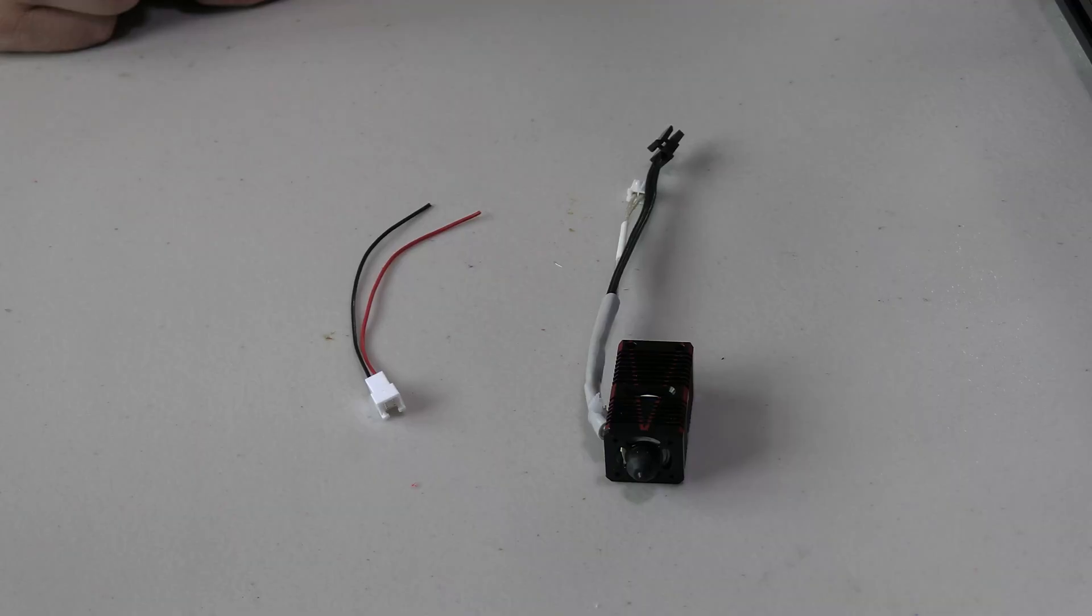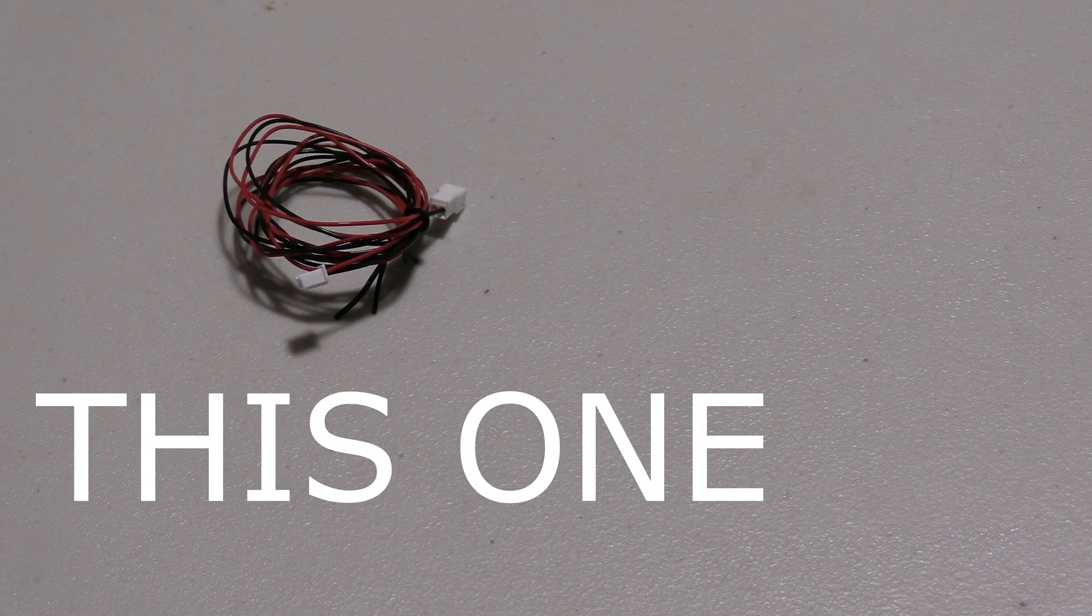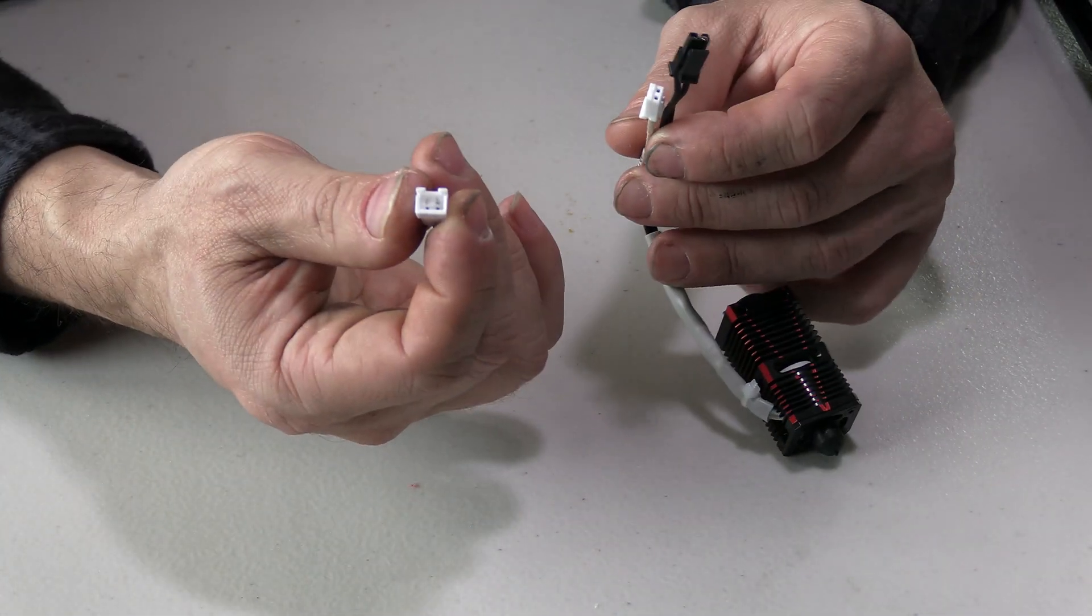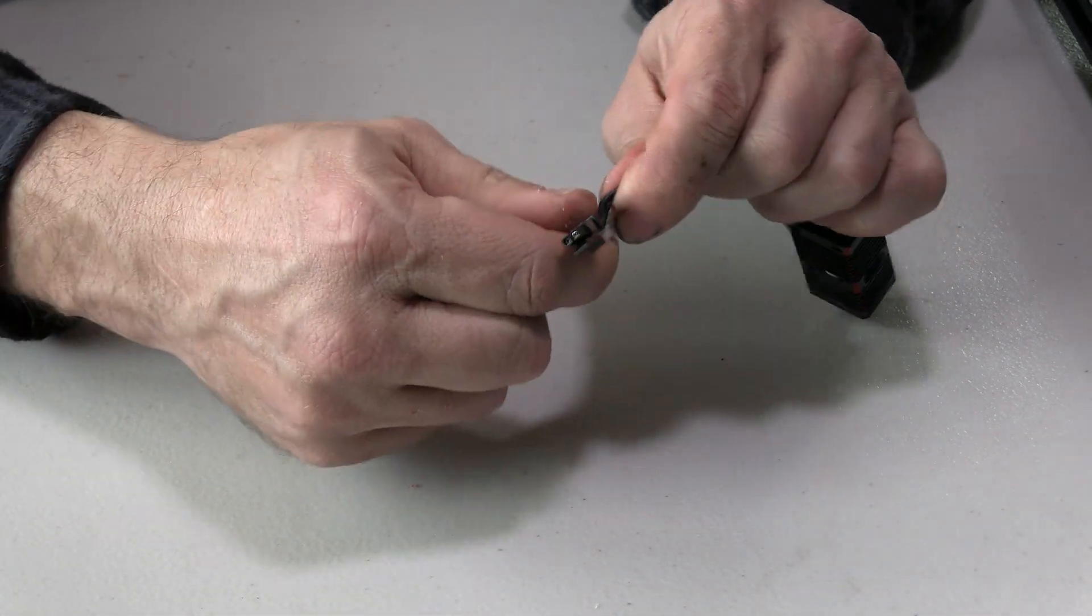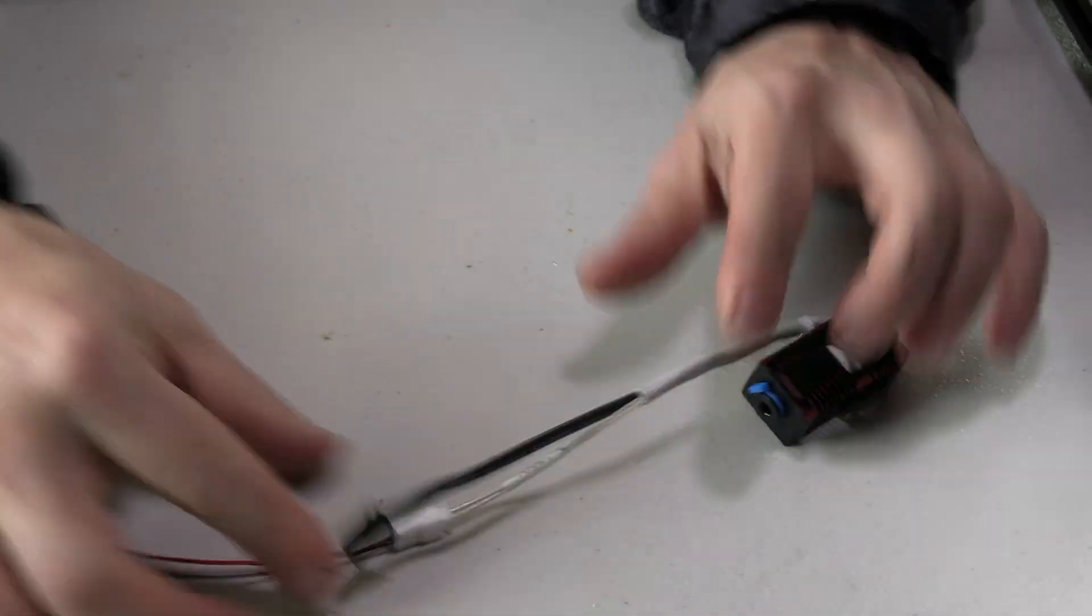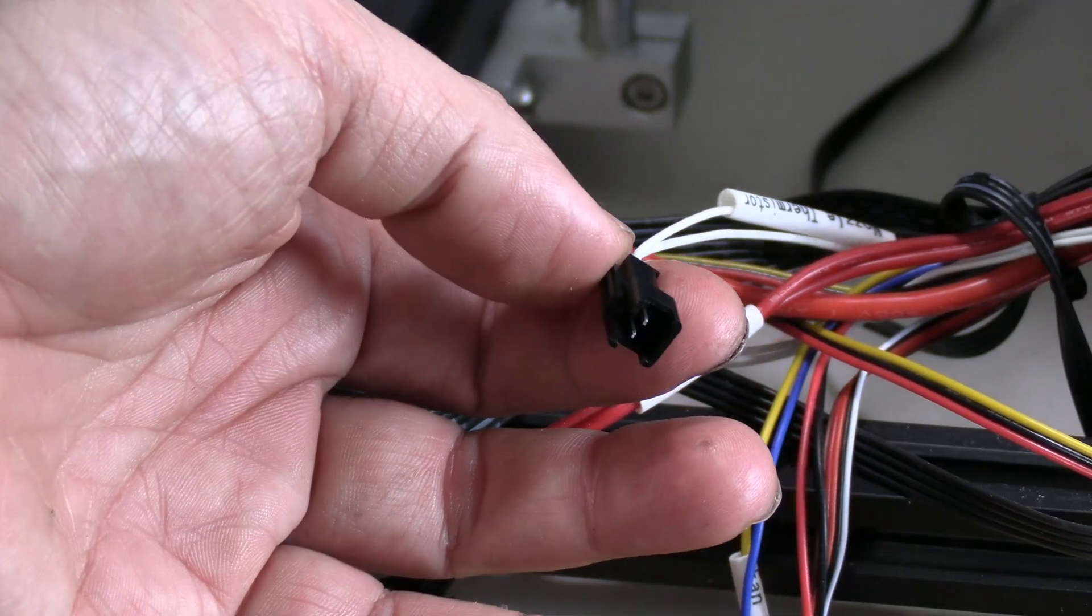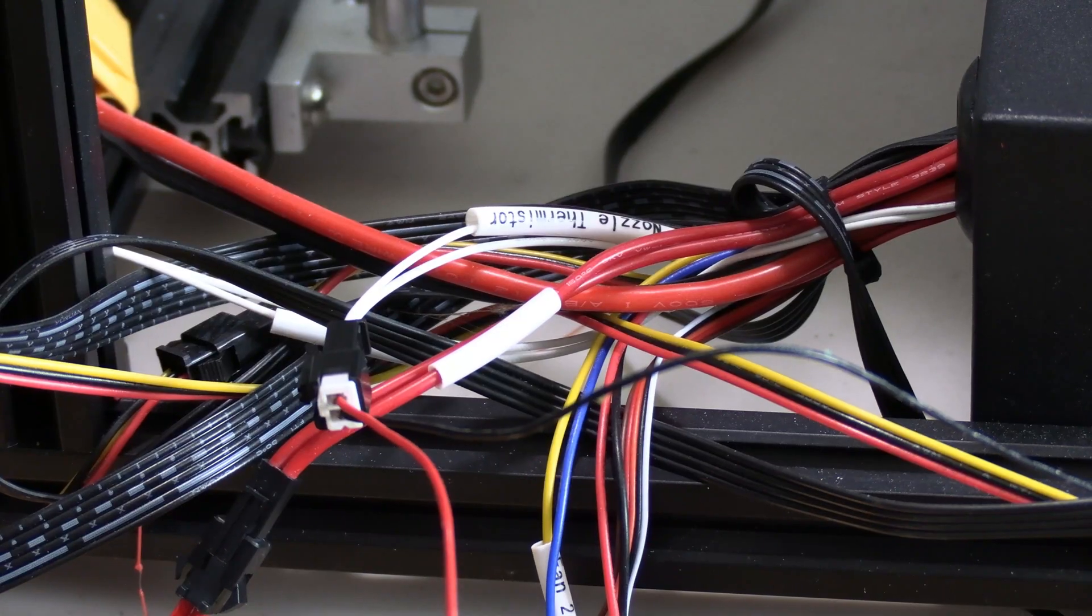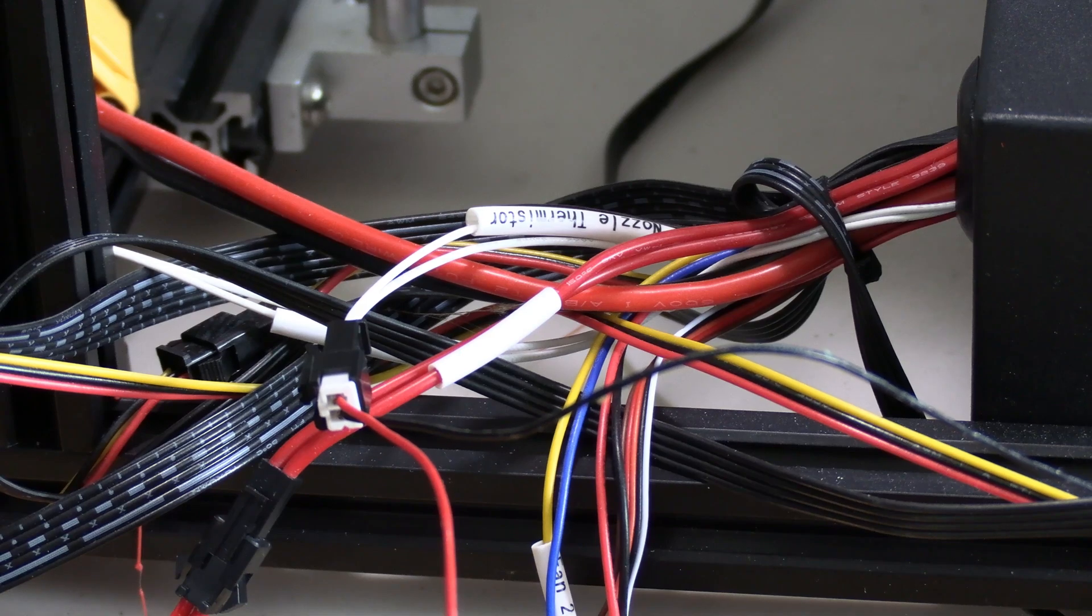Pro tip for those of you who don't feel like splicing this many wires, the harness that comes with this nozzle is compatible with the Ender 5 Plus. You can simply take the harness, plug one end into the thermistor on the hot end and the other end into the nozzle thermistor connector coming out of the power supply. And that's it you are done the thermistor is wired.